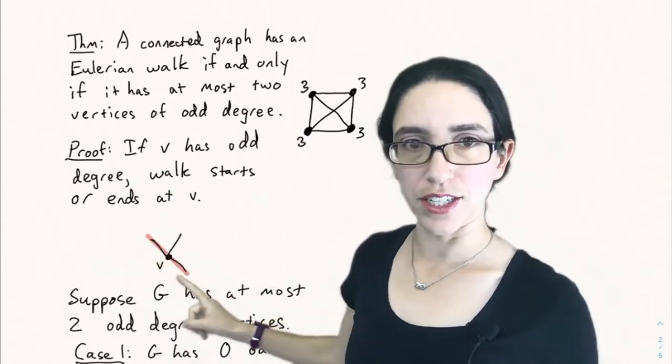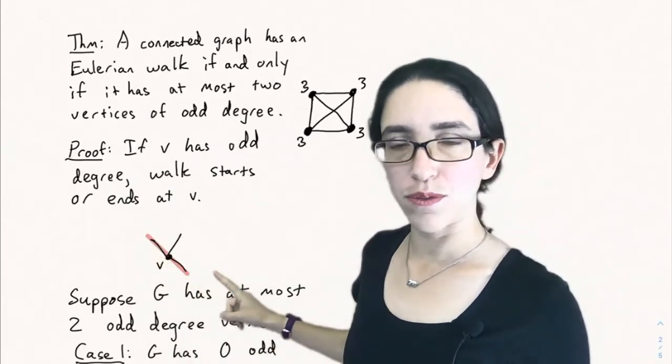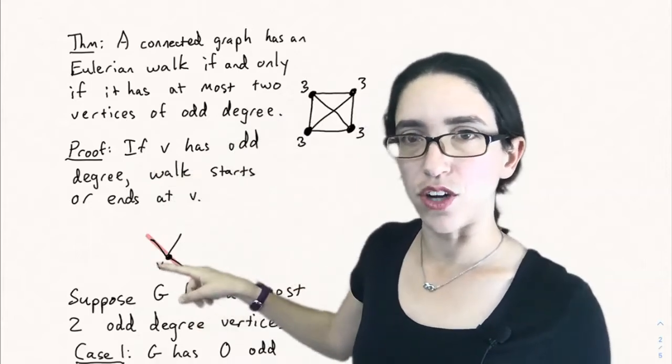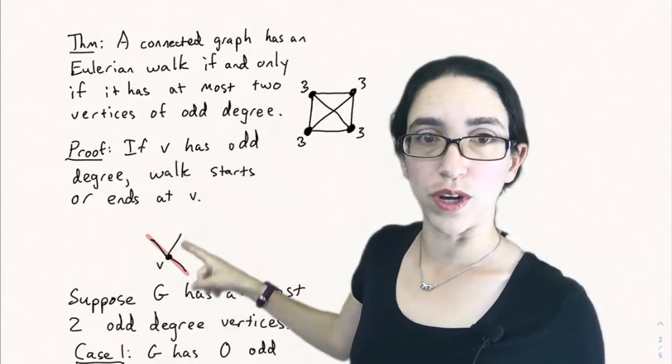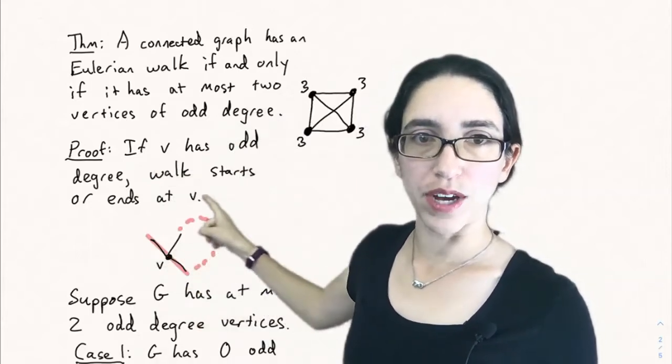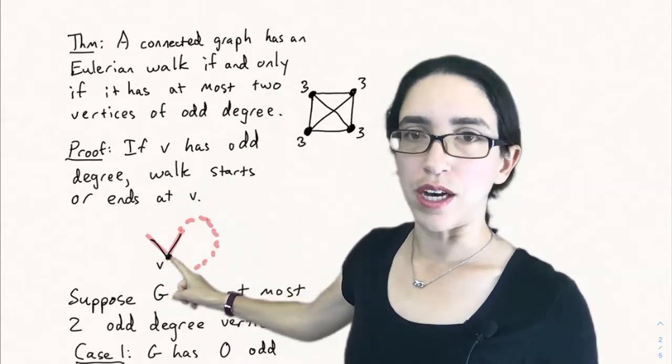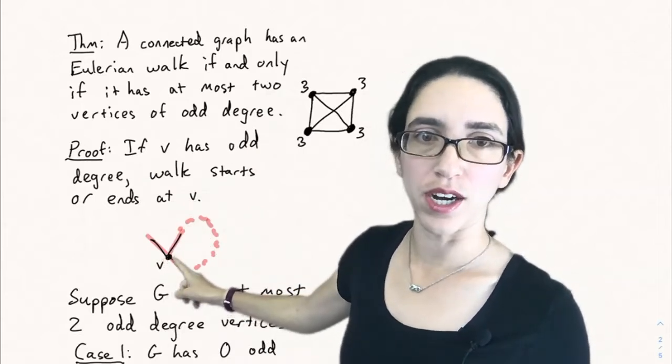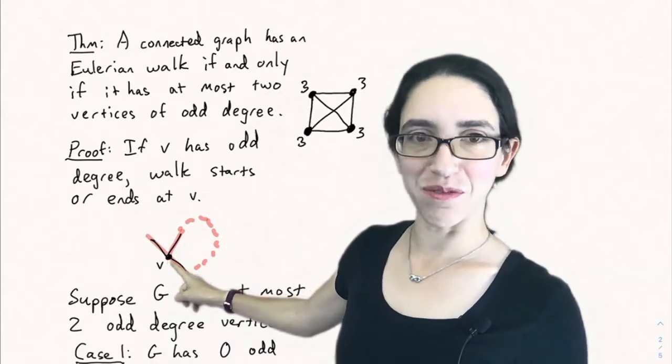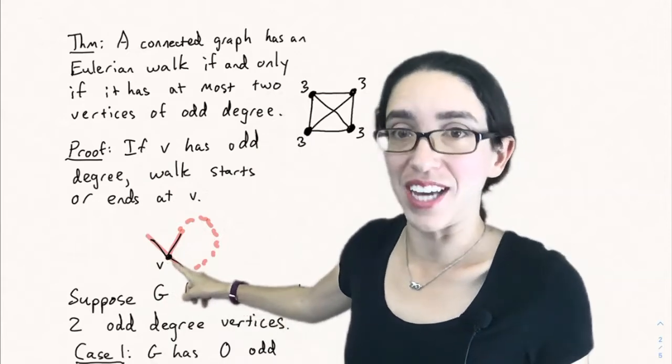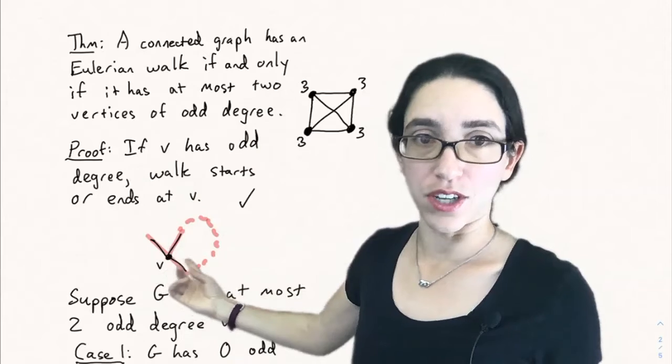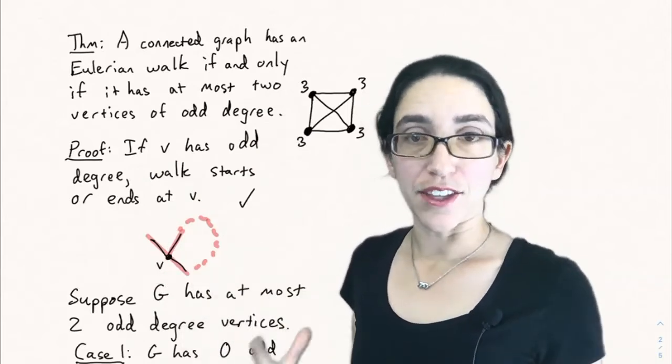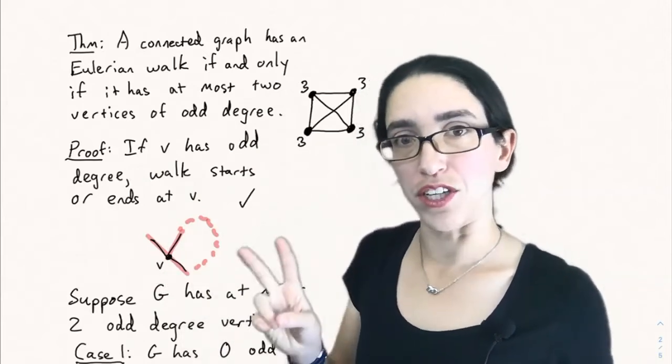But if you go through it, every time you pass through v, you use two edges. And there's still an odd number left. Eventually there's only one edge left. We have to go around and cover that edge inward towards v at some point to cover the edge in the Eulerian walk. But then, oh no, we ended at v. And so actually we did end at v after all. So if v has odd degree, you either have to start or end at v.